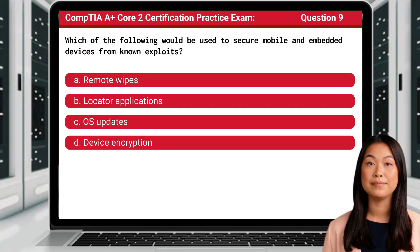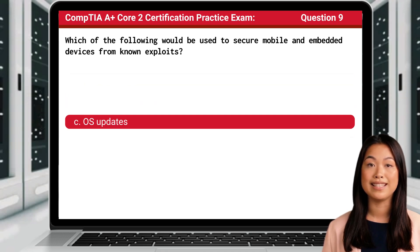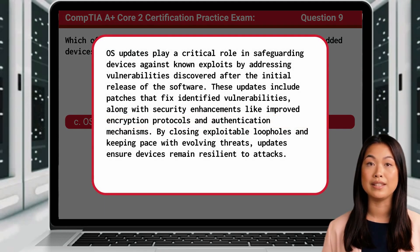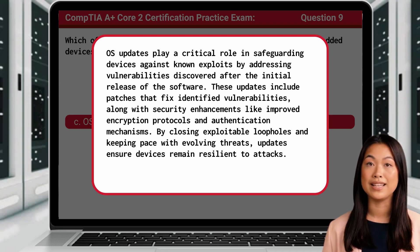Question 9. Which of the following would be used to secure mobile and embedded devices from known exploits? The answer is C: OS updates. OS updates play a critical role in safeguarding devices against known exploits by addressing vulnerabilities discovered after the initial release of the software. These updates include patches that fix identified vulnerabilities, along with security enhancements like improved encryption protocols and authentication mechanisms. By closing exploitable loopholes and keeping pace with evolving threats, updates ensure devices remain resilient to attacks.